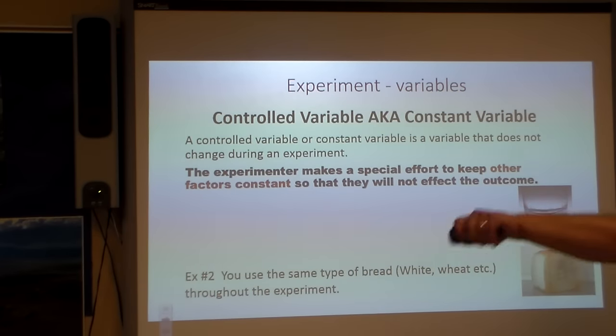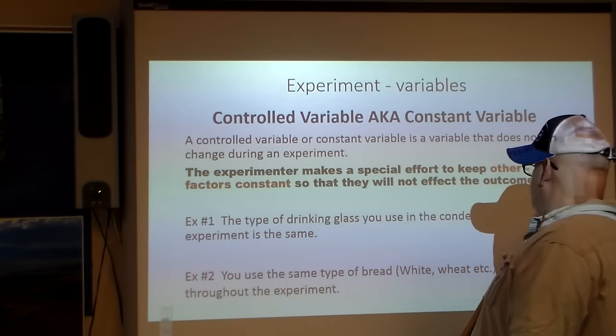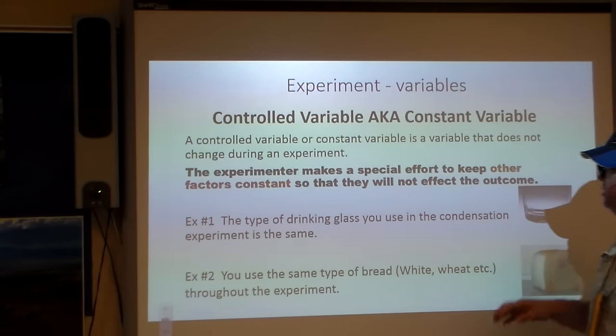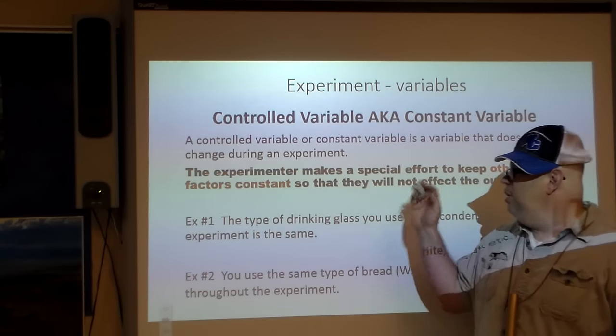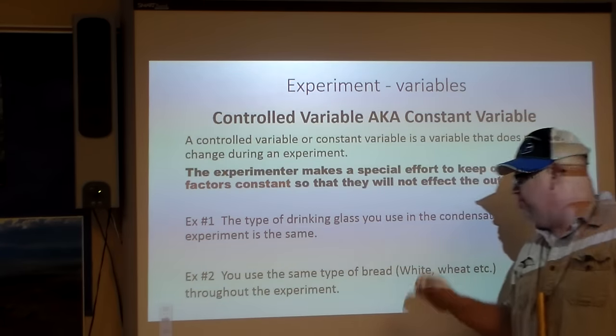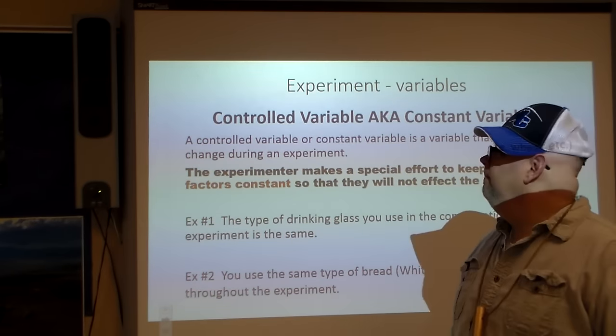The experimenter makes a special effort to keep other factors constant or the same so that they will not affect the outcome. Example number one, what about the type of drinking glass that we're going to use in our condensation experiment? It's the same. In experiment number two, we use the same type of bread - white, wheat - throughout the entire experiment.